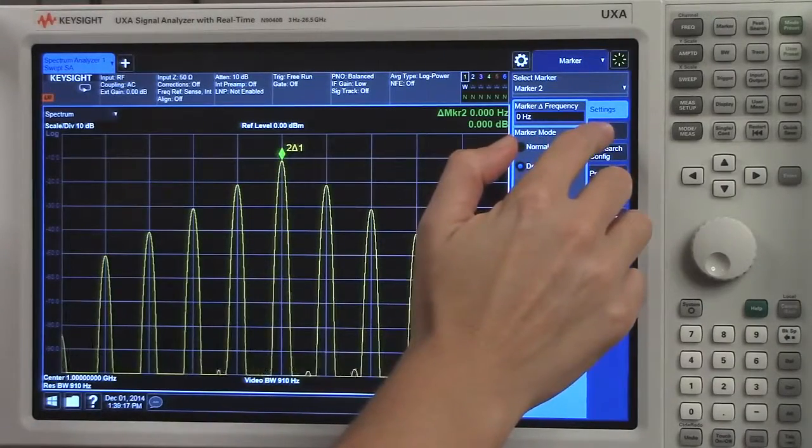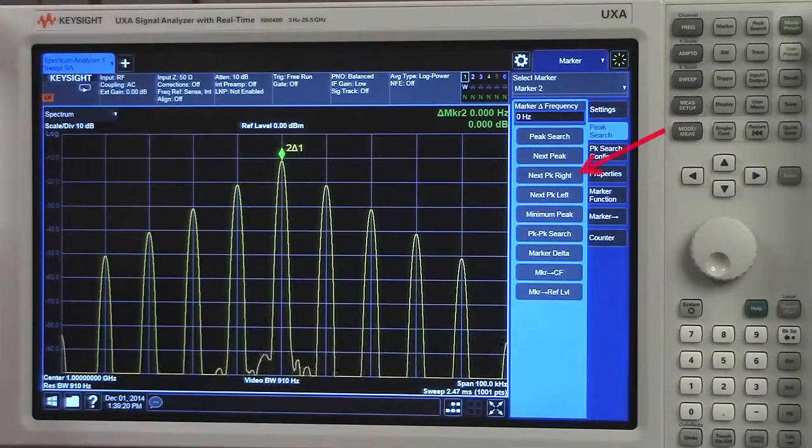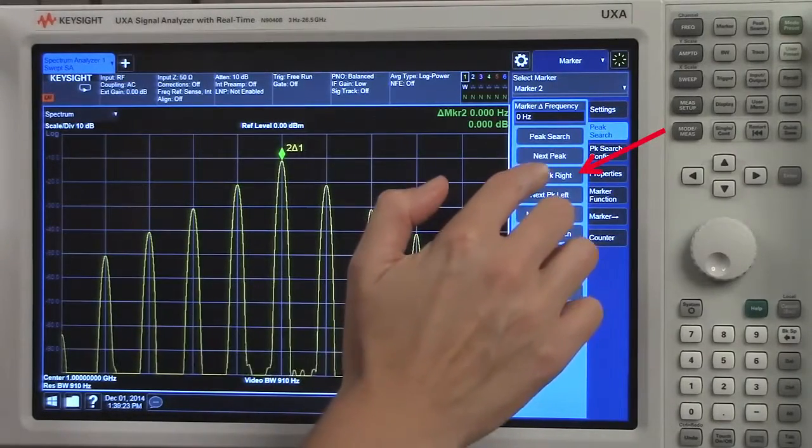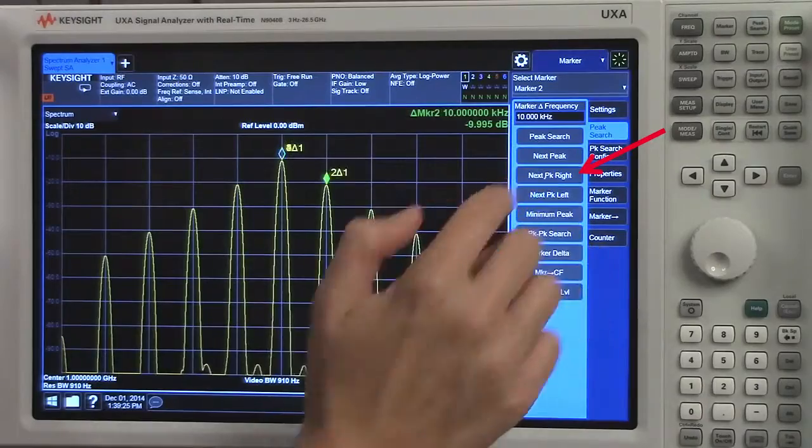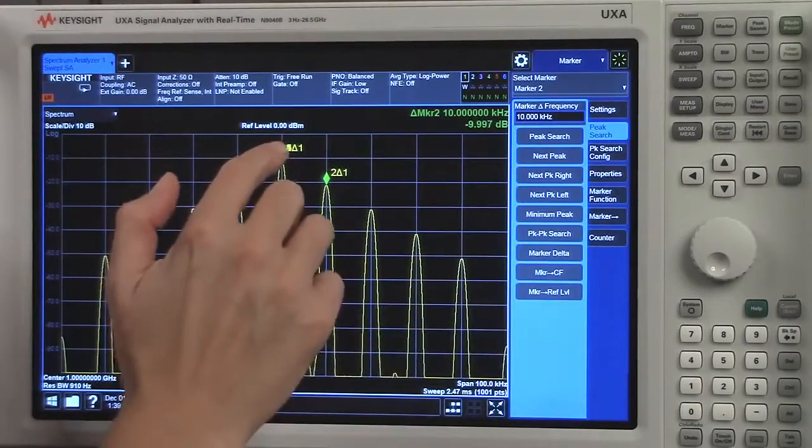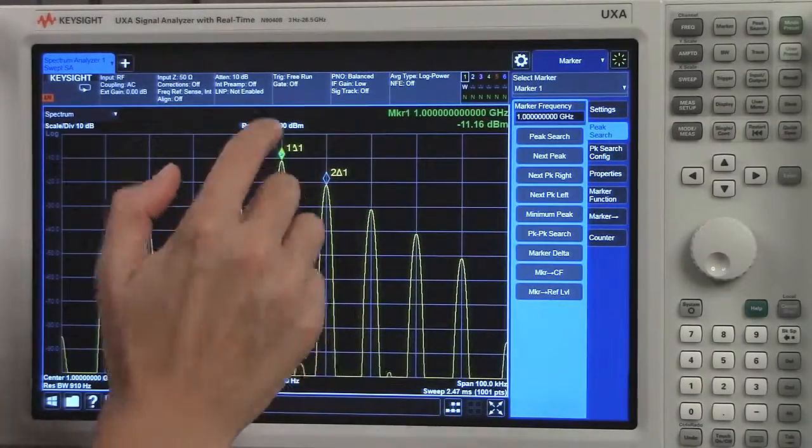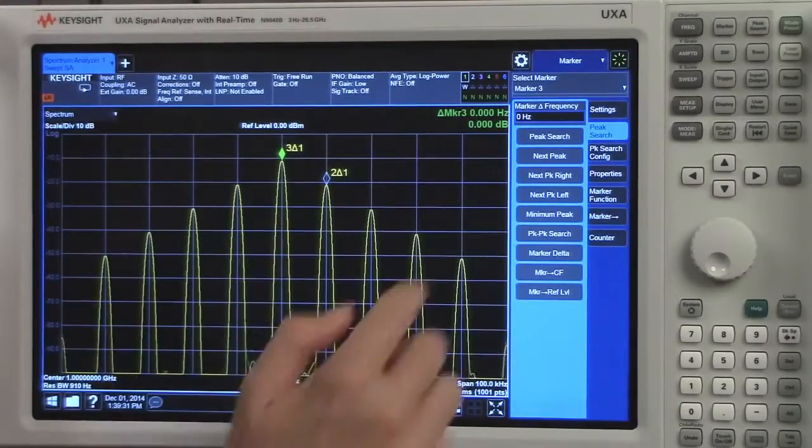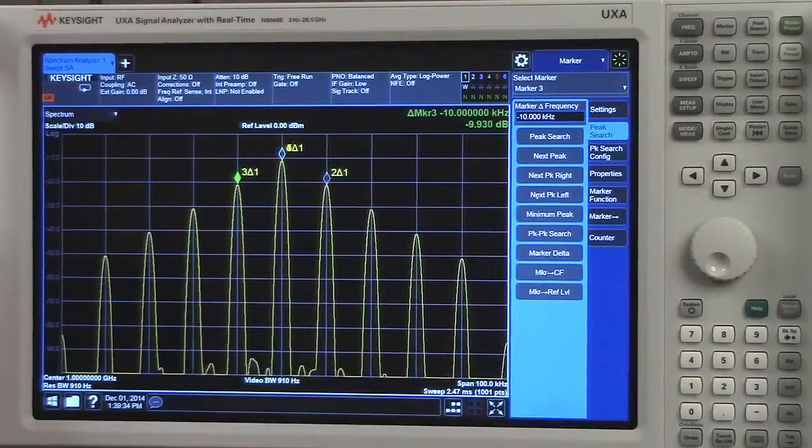We have another feature underneath our peak search tab. I can just move my marker two. I can select next peak right. Now I'll go ahead and I'll select these markers until I find marker three. Then I'll select next peak left.